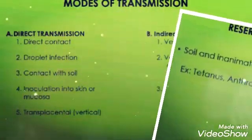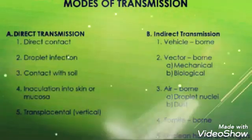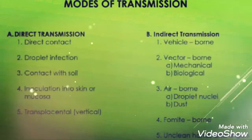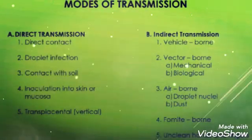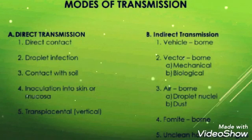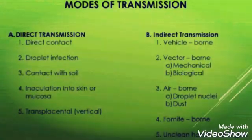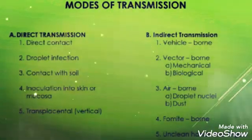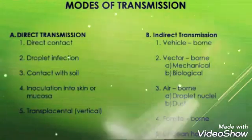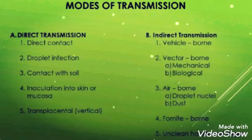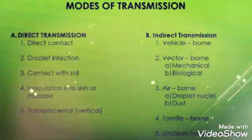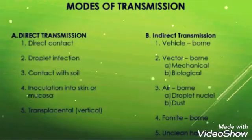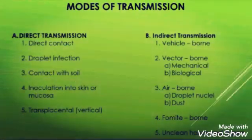Now we'll see the modes of transmission. There are mainly two modes: direct transmission and indirect transmission. Direct transmission means directly from the object, and indirect transmission means it is secondary through some other objects. Direct transmission includes direct contact, droplet infection, contact with soil, inoculation into skin or mucosa, and transplacental or vertical transmission. Indirect transmission includes vehicle-borne, vector-borne, airborne, fomite-borne, and unclean hands and fingers.